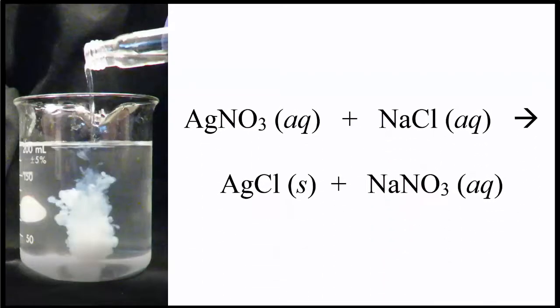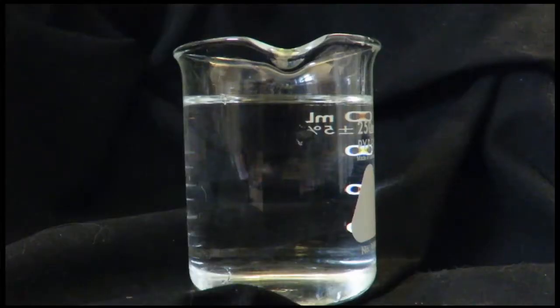So we could write the equation like this, where the AQ stands for aqueous, dissolved in water. And the S after the silver chloride, the AgCl, that's a solid. It's a precipitate.